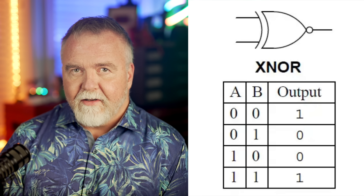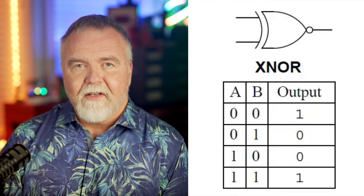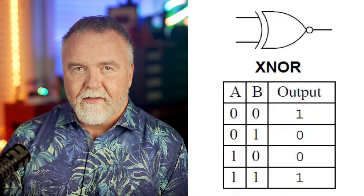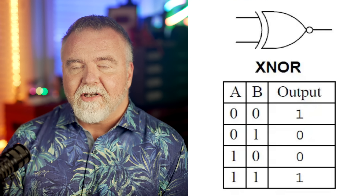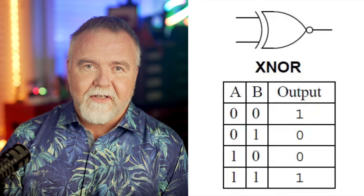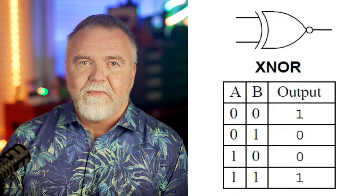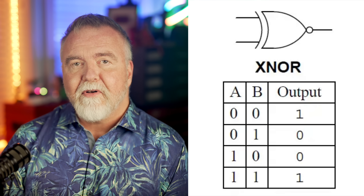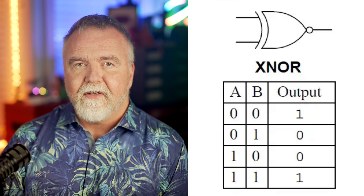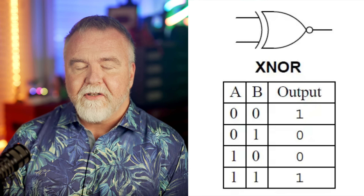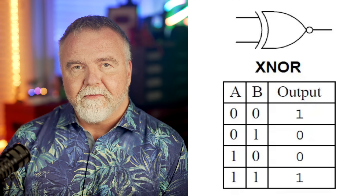XNOR gate. An XNOR gate, also known as an exclusive NOR gate, is a complement of an XOR gate. It produces a high output if the two input signals are the same, and a low output if the inputs are different. So if the two inputs match, the result is true.